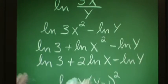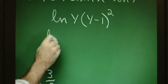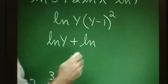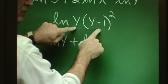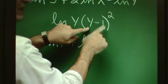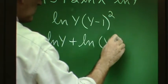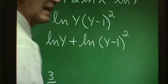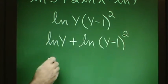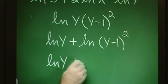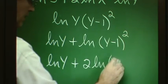On this one, we begin with a product, so we have ln y plus ln of the other factor: plus ln of y minus 1 squared. Using the power property to rewrite that term, we have ln y plus 2 ln(y minus 1).